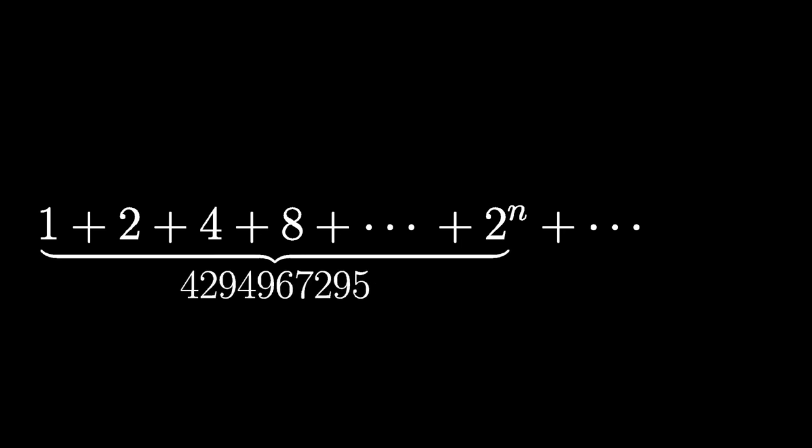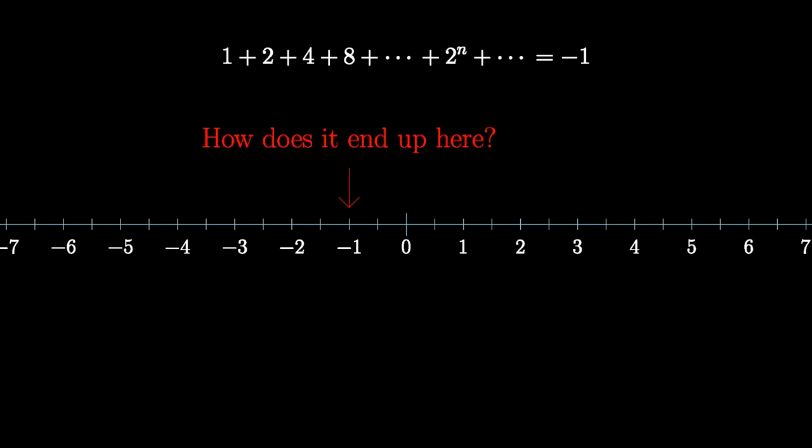Take 1 plus 2 plus 4 plus 8, and continue on adding the next power of 2 up to infinity. This might seem crazy, but there's a sense in which this infinite sum equals negative 1. If you're like me, this feels strange or obviously false when you first see it. But I promise you, by the end of this video, you and I will make it make sense.